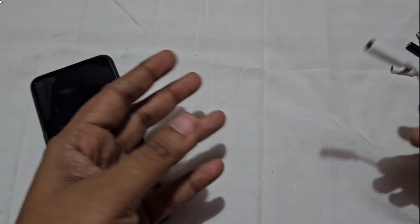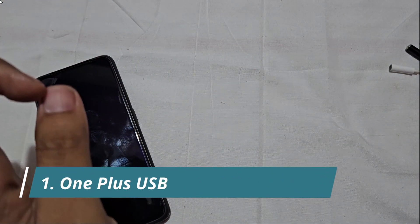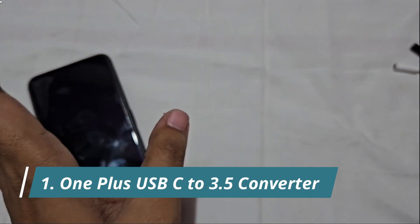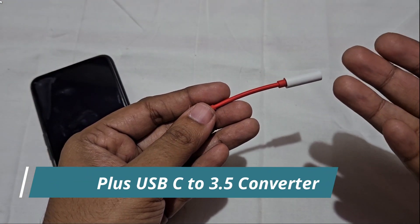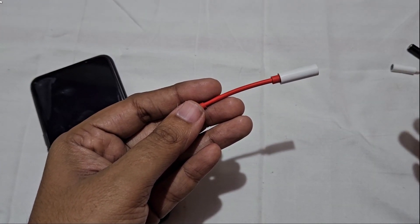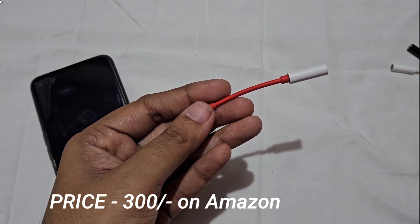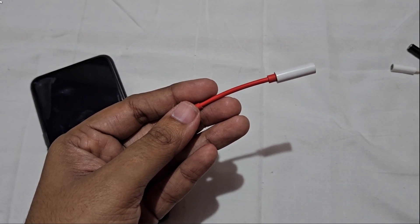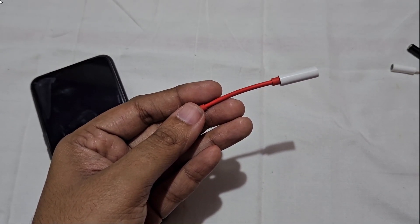I am using this one. This is the OnePlus 3.5mm to USB-C converter. This OnePlus one is not bad. You can get this on Amazon. It has great quality, excellent quality. It has Dolby Atmos support. Quality is super.